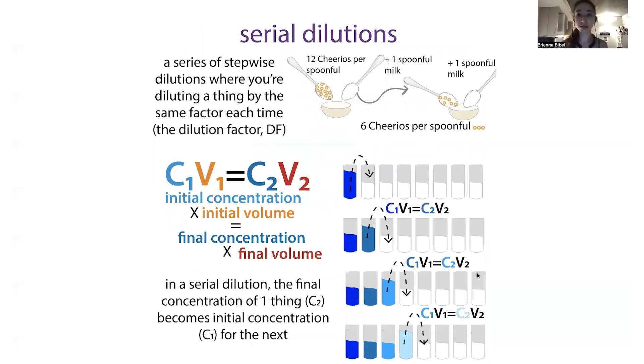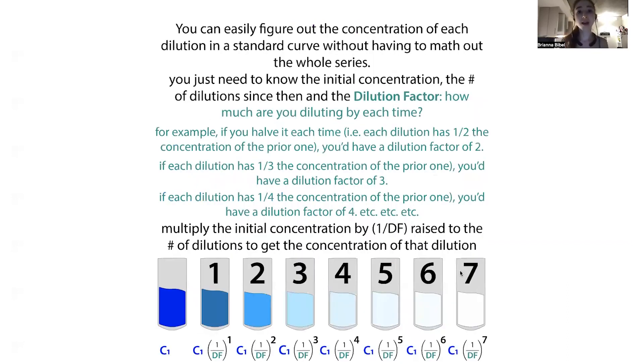We can also use C1V1 equals C2V2 to take advantage of it when we're doing serial dilutions. A serial dilution is basically where you do the same dilution over and over. You take something and you half it and you half that and you half that. These are really helpful if you want to cover a broad range of concentrations. They're helpful so that you don't have as many pipetting errors if you need to get to a really low concentration. Because you're taking one and diluting it, and then using that diluted thing to dilute another thing and then another thing, in each case your initial concentration is going to be coming from the concentration of the thing before it multiplied by a dilution factor.